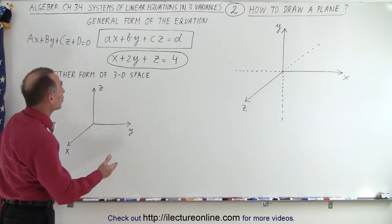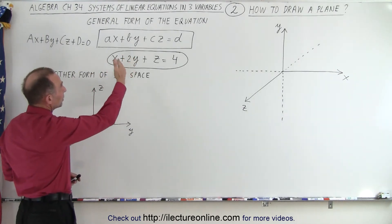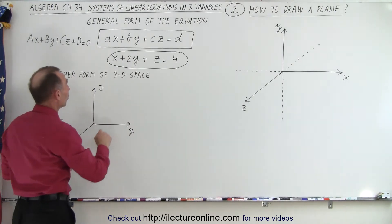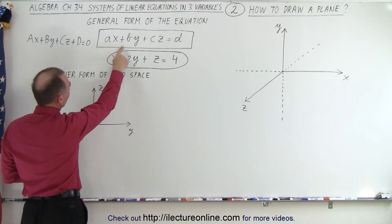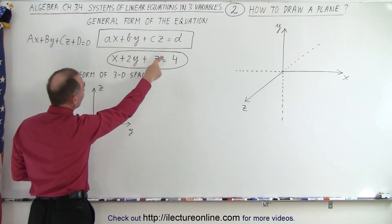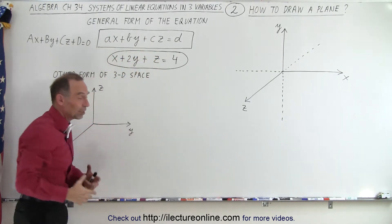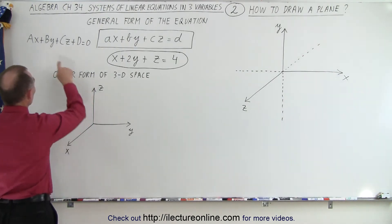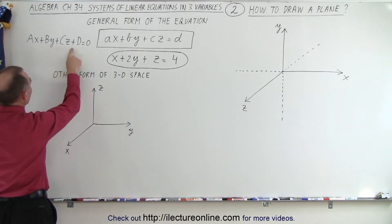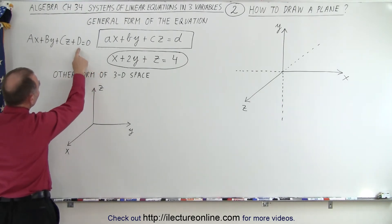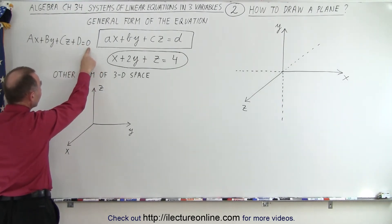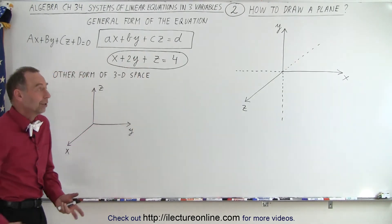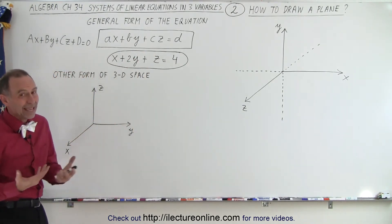Here we have what we would call the general form of a three-dimensional linear equation — that's important. We can write it like this: ax plus by plus cz equals d, where a, b, c, and d are simply constants. The more general form is ax plus by plus cz plus d equals zero, but if you move the big D to the right, you get a minus big D and you can just call that a little d. Either way, it's the same equation.